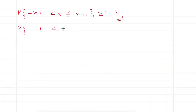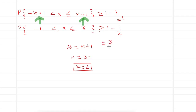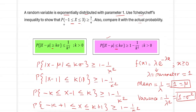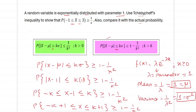The question requires us to find the probability of minus 1 less than or equal to x less than or equal to 3. Comparing with the derived expression, we set k plus 1 equal to 3, so k equals 2. Substituting into the Chebyshev inequality, the probability is greater than or equal to 1 minus 1 by 2 squared, which is 1 minus 1 by 4, giving 3 by 4. Hence we have shown that probability of minus 1 less than x less than 3 is greater than or equal to 3 by 4 using Chebyshev's inequality.